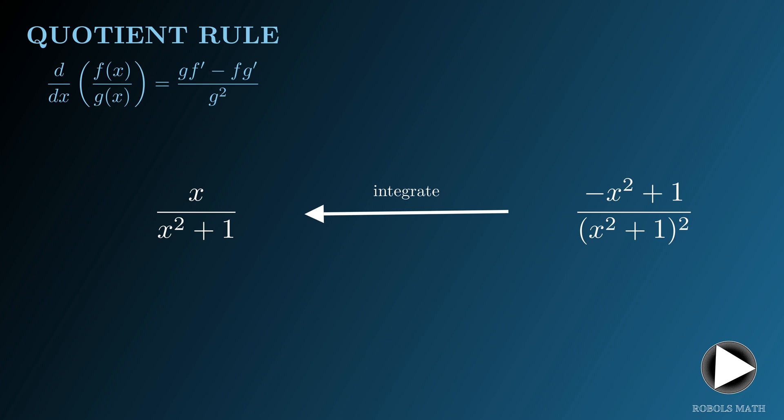As is the case with most, finding the antiderivative is often far more difficult than finding the derivative. It is easy to find the derivative of x over x squared plus 1, but it might be challenging to find the antiderivative of negative x squared plus 1 over x squared plus 1 quantity squared. This is where the reverse quotient rule method comes in handy.